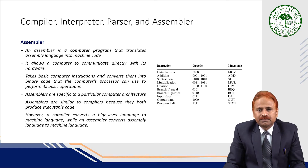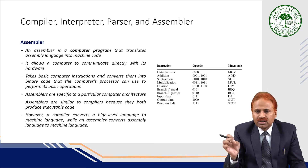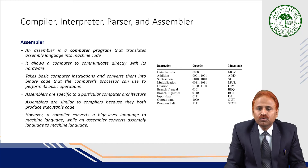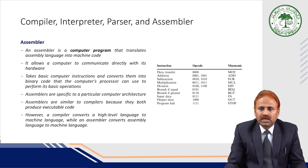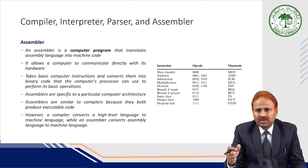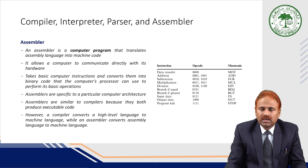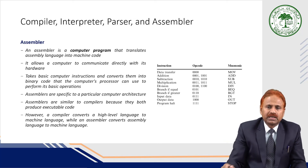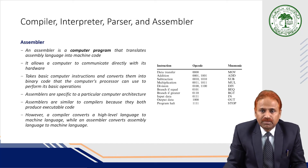For example, the instruction for data transfer is 0000 in machine code, while the mnemonic or assembly language used is MOV (move). Similarly, for addition, the machine code is 0011, and the mnemonic used in assembly language is ADD. So, when writing a program using mnemonics, the assembler converts it into the equivalent object code or machine-level code.